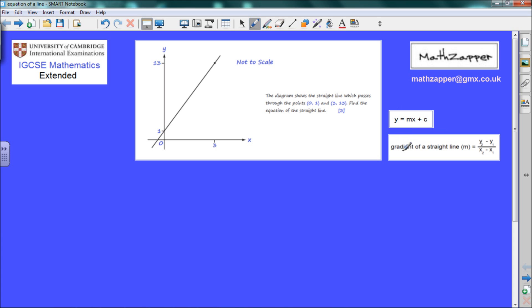To get to the answer we need to know the gradient of a straight line, which is the m part of y equals mx plus c. We find that by the second value of y minus the first value of y, all divided by the second value of x minus the first value of x.